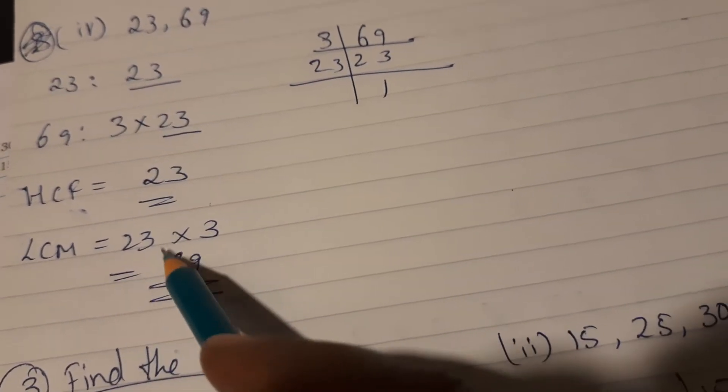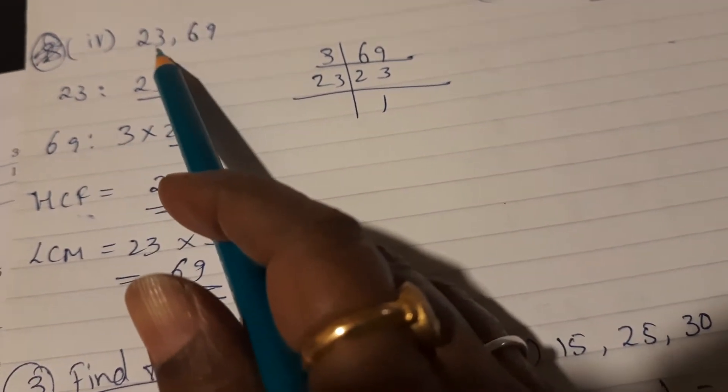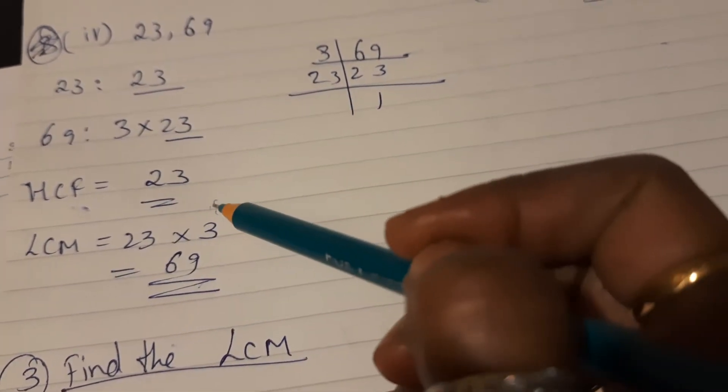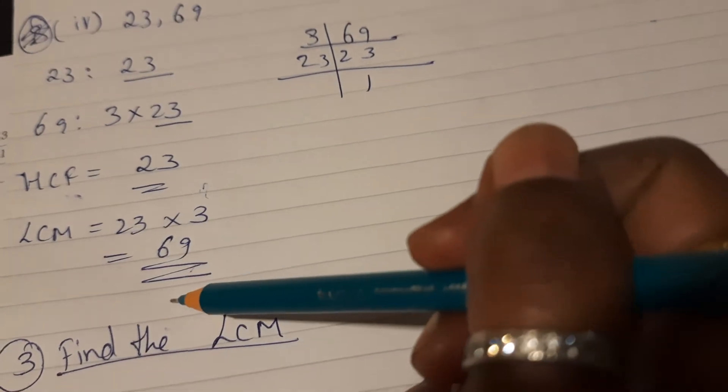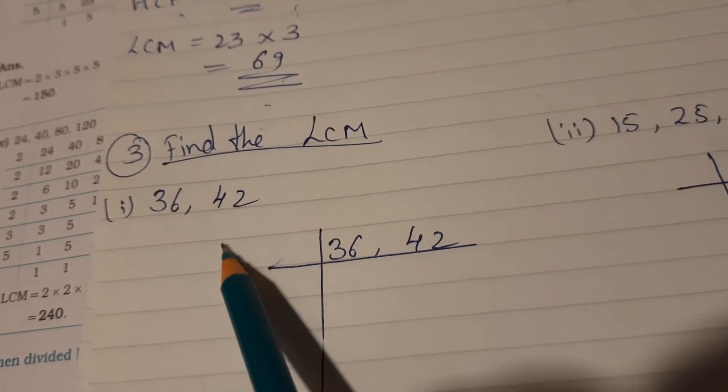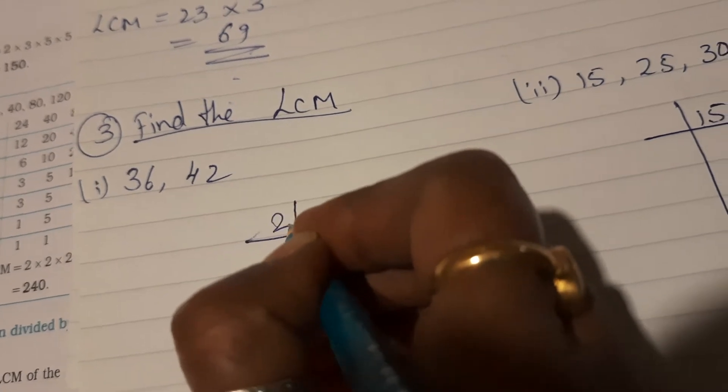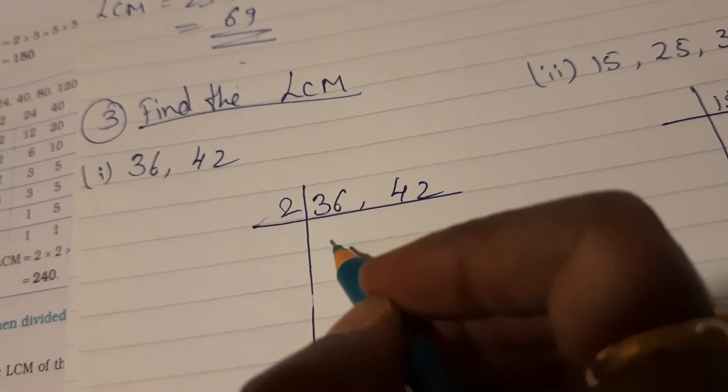So LCM will be 23 into 3, that is 69. You can see 23 is a smaller number, that's the HCF, and the bigger number is your LCM. Fifth sum is for homework children. Third question, find the LCM.